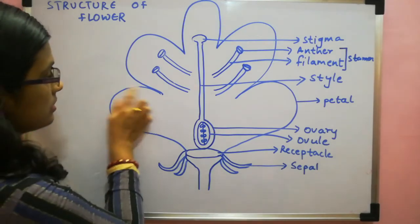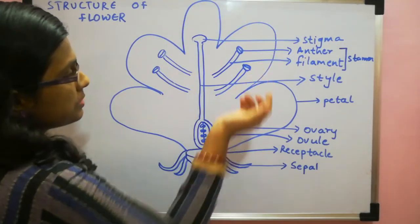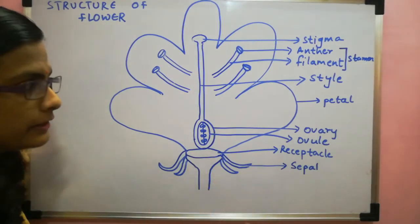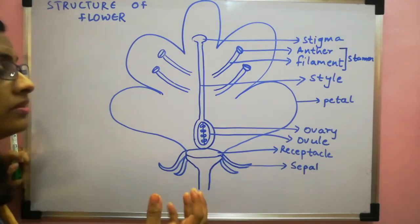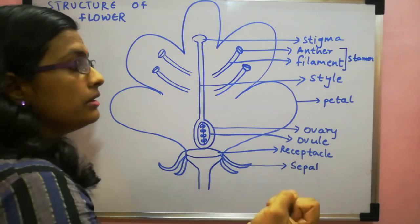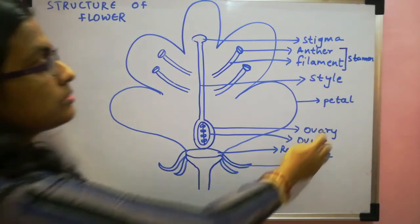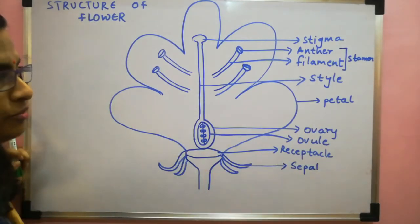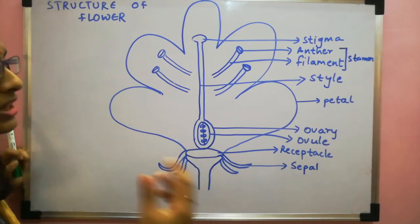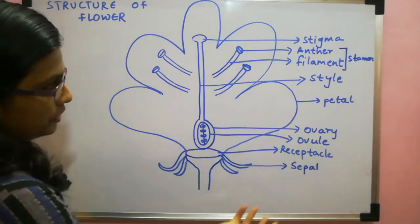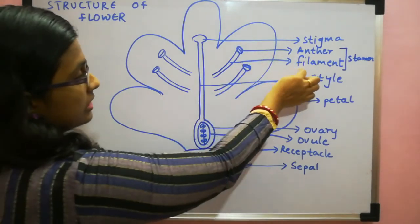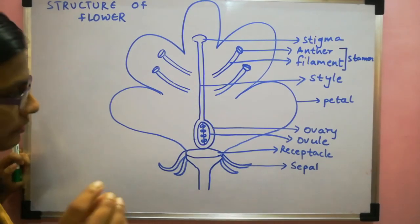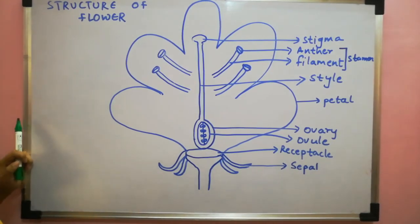And the last part is petals. Petals do not directly take part in reproduction process but petals are brightly colored. They have fragrance. So basically they help in reproduction by attracting the insects for pollination. So petals and sepals basically they are called as non-reproductive part. But yes they indirectly play a major role in this reproduction process. Otherwise the stamen part and the pistil part are the reproductive organs of a plant. Thanks for watching.